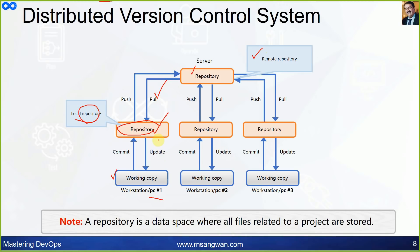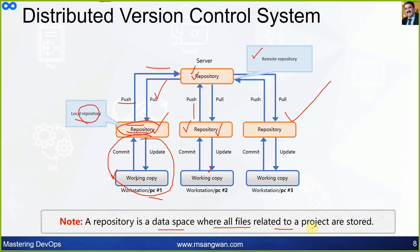The user pulls the code from remote to local and works in the local environment — that is the working copy. Changes are committed to the local repository. When satisfied, the user can push the code to the remote repository. The same applies to PC 2 and PC 3. A repository is a data space where all files related to a project are stored.